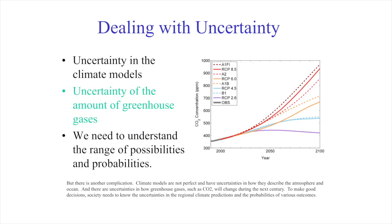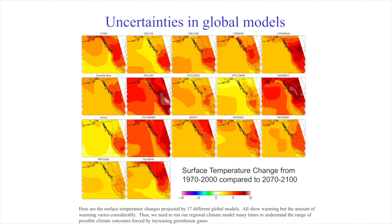But there is another complication. Climate models are not perfect and have uncertainties in how they describe the atmosphere and the ocean, and there are uncertainties in how greenhouse gases such as CO2 will change during the next century. To make good decisions, society needs to know the uncertainties in the regional climate predictions and the probabilities of various outcomes. Here are the surface temperature changes projected by 17 different global models — all show warming, but the amount of warming varies considerably. Thus we need to run our regional climate model many times to understand the range of possible climate outcomes forced by increasing greenhouse gases.